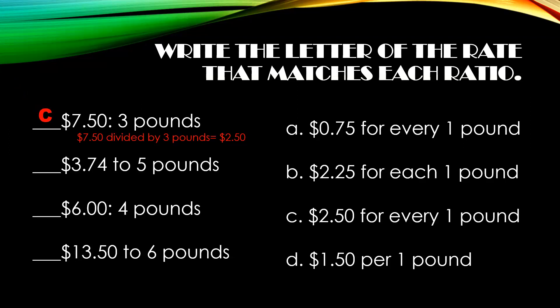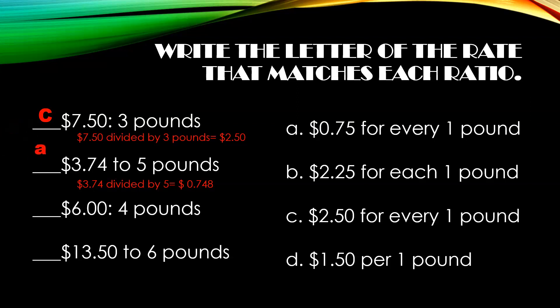The second problem, I have $3.74 to five pounds. I want to take $3.74 and divide it by five, and I get 74 and eight. So I would round it up, making it 75 cents for every one pound. The correct answer is A.